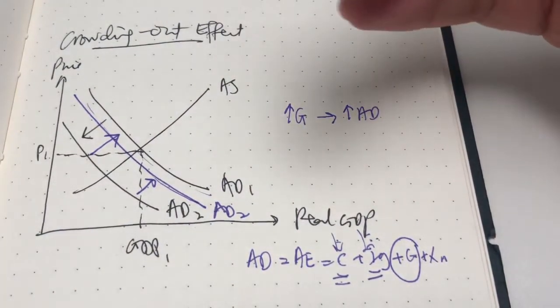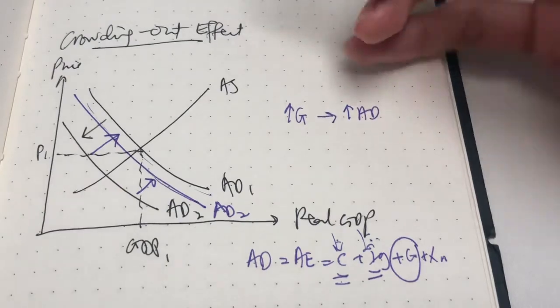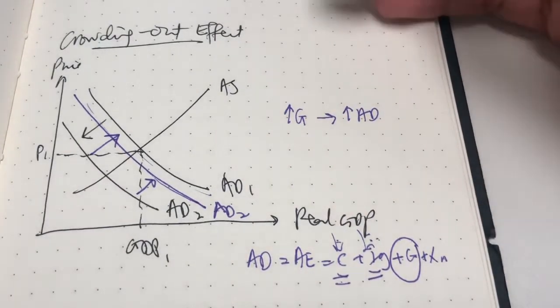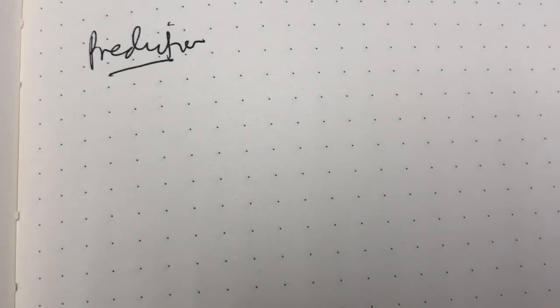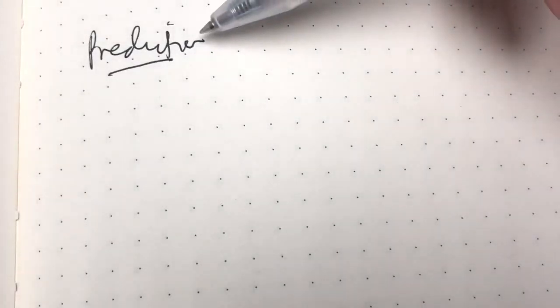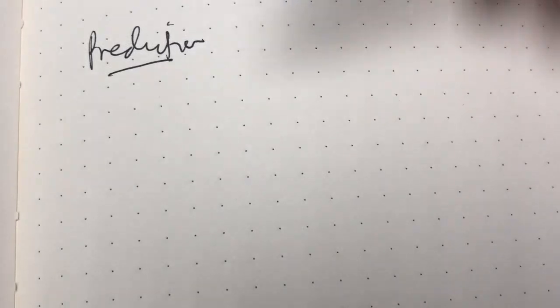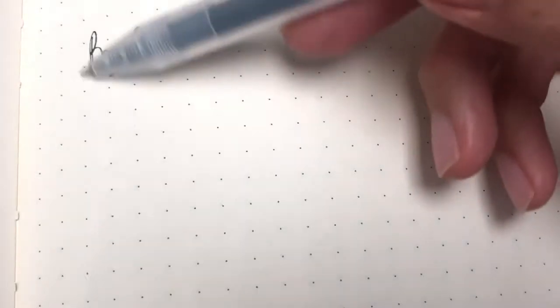What it means is, an increase in interest rates would crowd out some of the investments. When the government implements fiscal policy, more of the effects are based on predictions or forecasts. Therein lies the third problem of fiscal policy, which is the accuracy of these predictions.